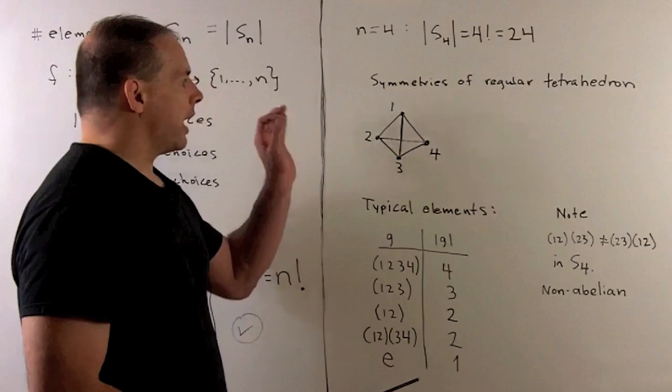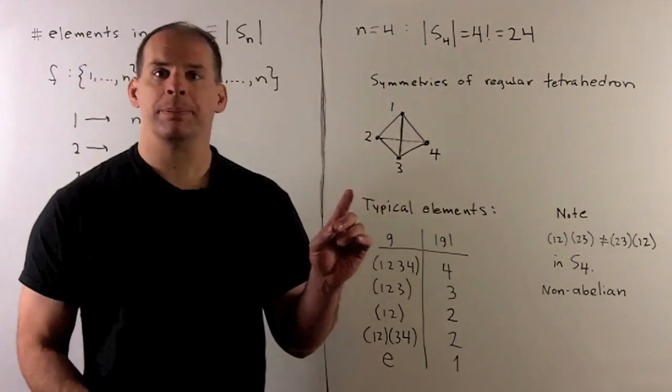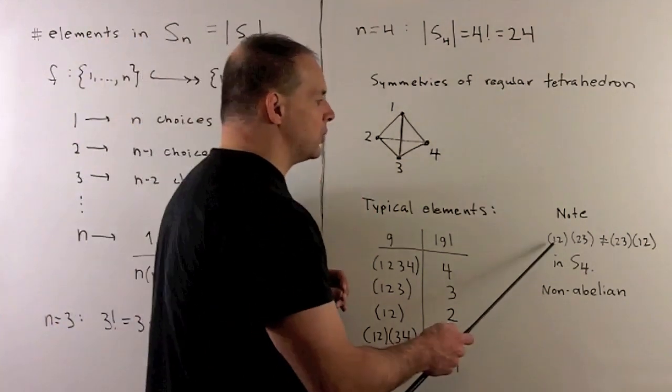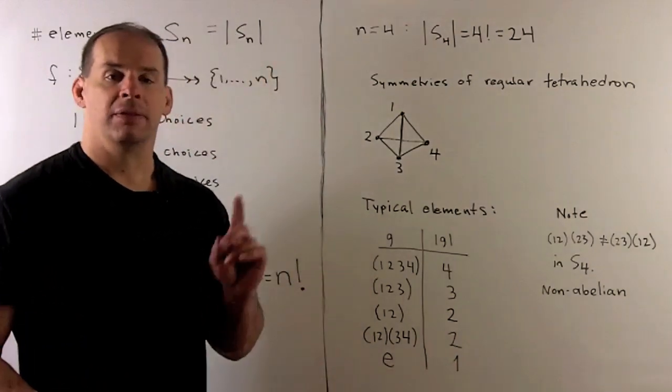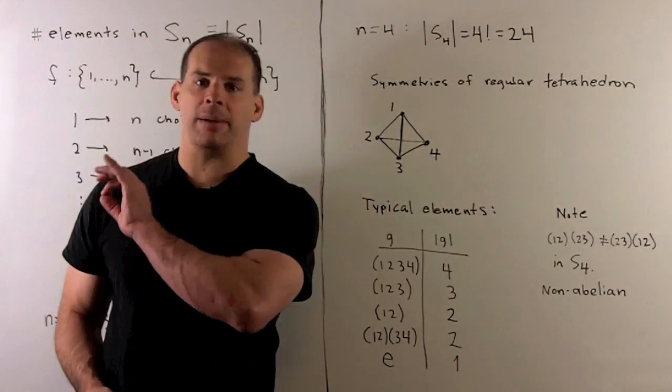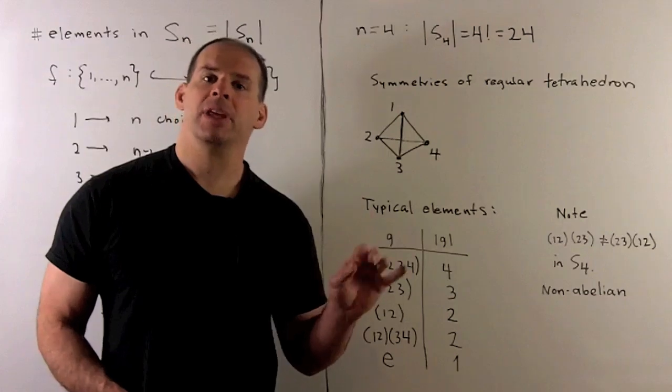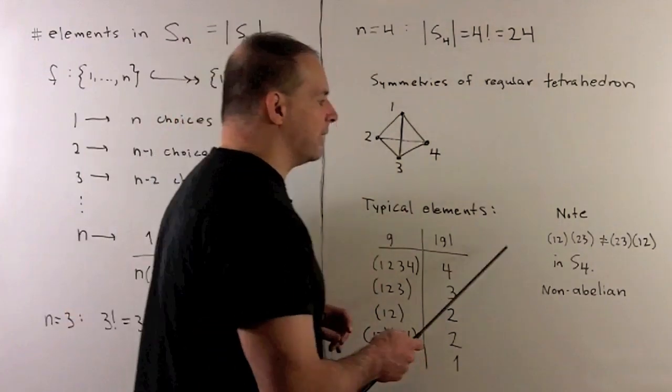S₄ is still going to be non-abelian. I could still use (1,2) times (2,3) to test. In fact, for any Sₙ with n ≥ 3, still non-abelian since we'll have these elements too.